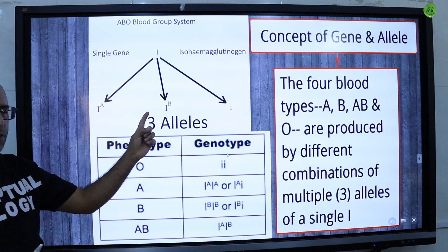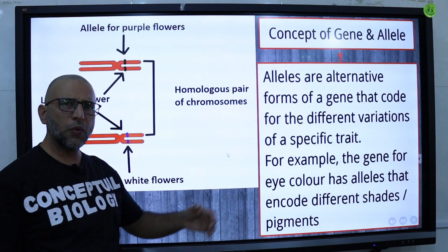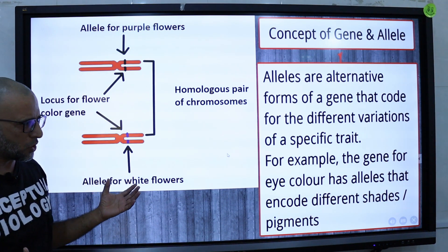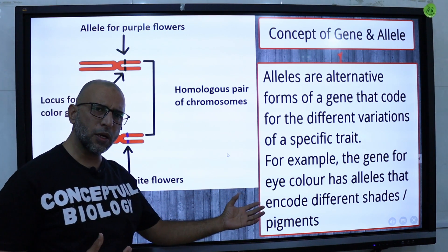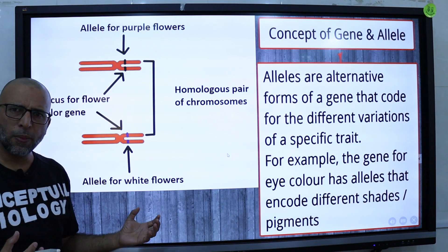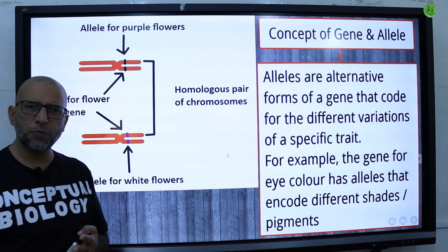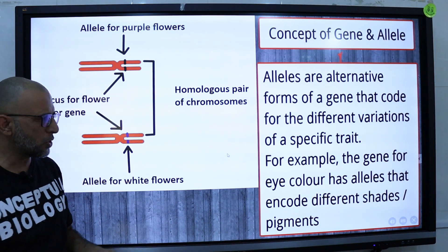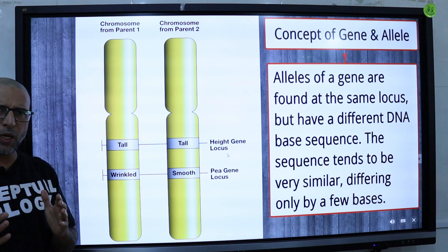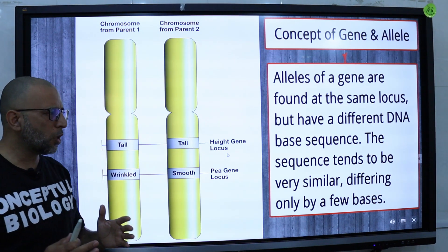The four blood types are produced by different combinations of multiple alleles of the single gene I, which has three alleles. Alleles are alternative forms of a gene that code for different variations of a specific trait. For example, the gene for eye color has alleles that encode different shades or pigments. Genes are responsible for the expression of a trait, and alleles are responsible for the variations in the given trait. Alleles of a gene are found at the same locus but have different DNA base sequences, though the sequence tends to be very similar, differing by only a few bases.